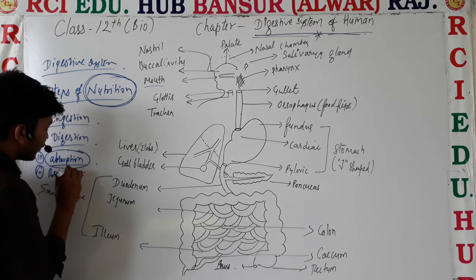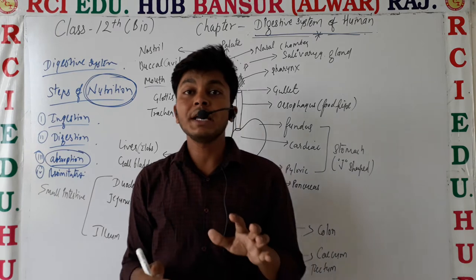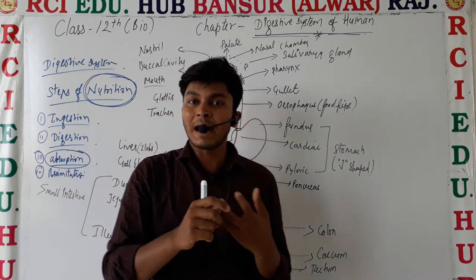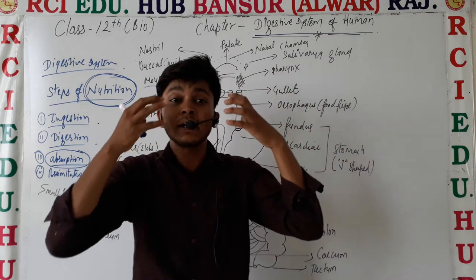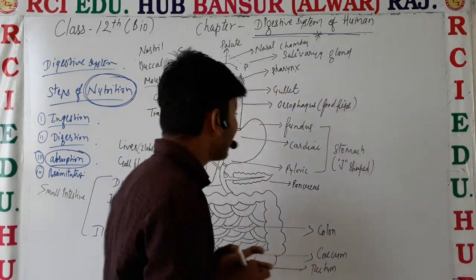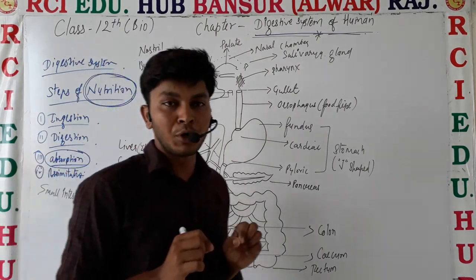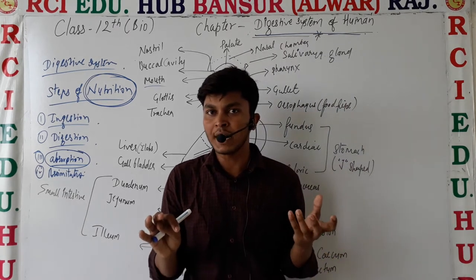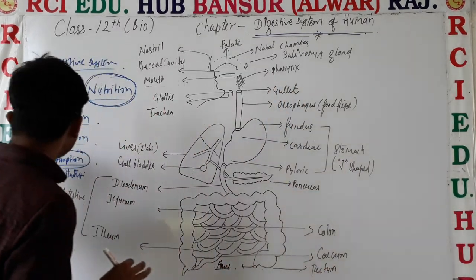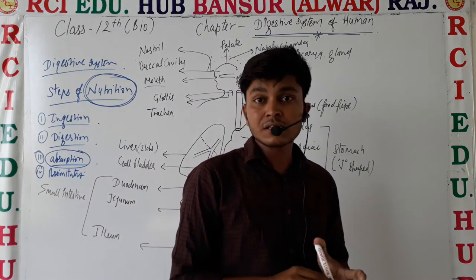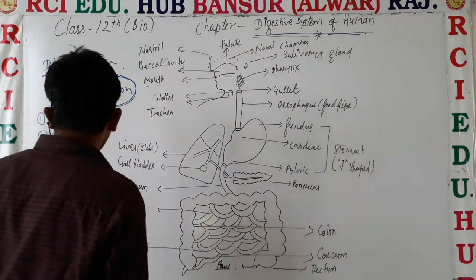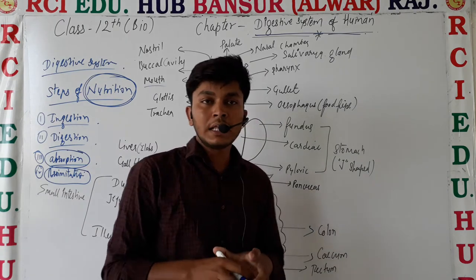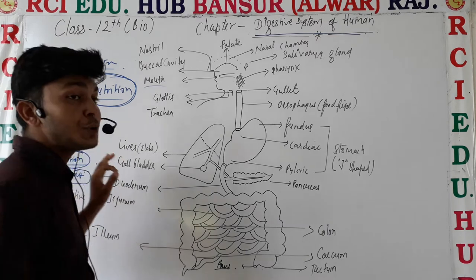The fourth step is assimilation. Whatever food was digested and absorbed, that absorbed food dissolves in the blood and plasma. After being dissolved in the blood, it is circulated to all parts of the body, reaching every single cell. Each cell contains a special organelle known as mitochondria, which converts that digested food into energy — the currency of energy being ATP. That process is known as assimilation.